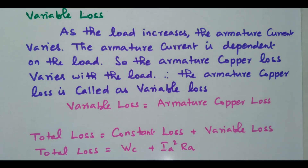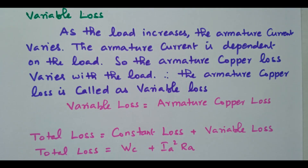In this video, we discussed efficiency and the associated losses. The losses are majorly of three types: copper loss, iron loss, and mechanical loss. These are further classified into constant loss and variable loss. Subscribe to this channel for more videos; the link is available in the description box for other videos and course material. Thank you.